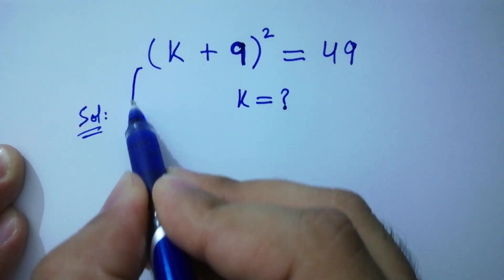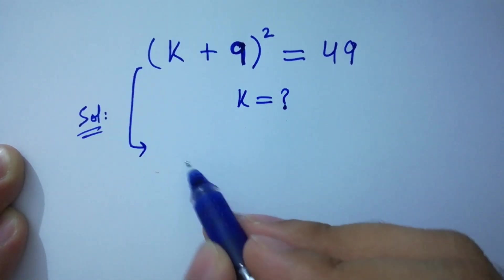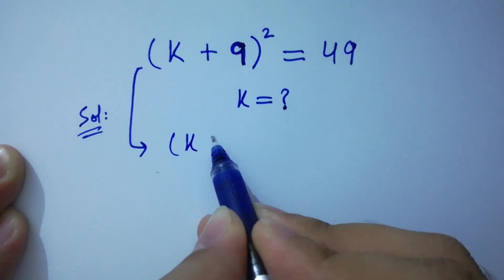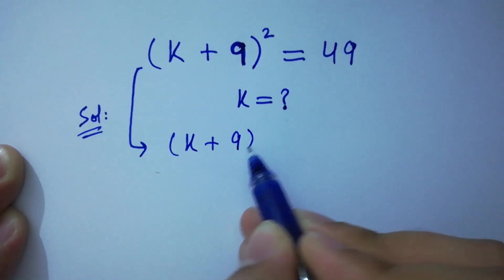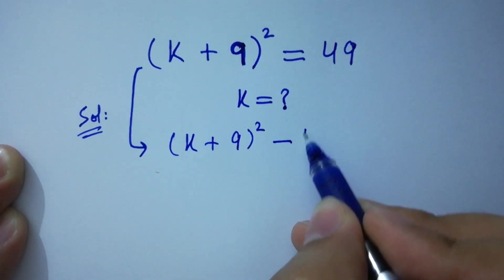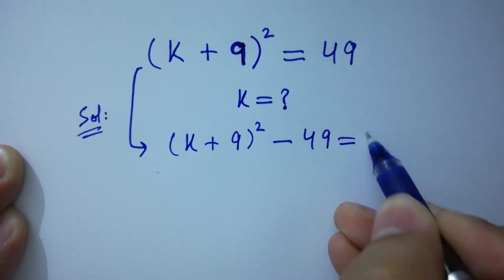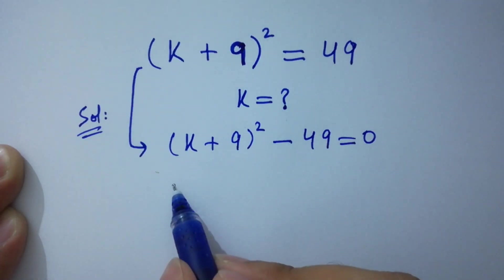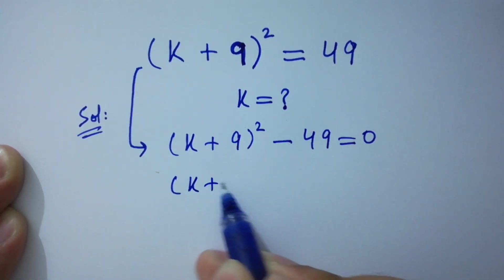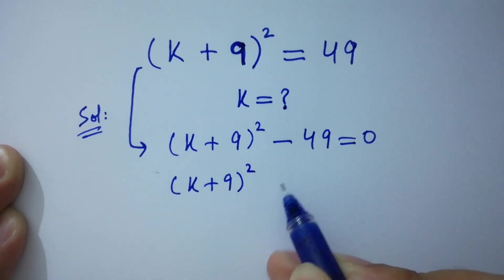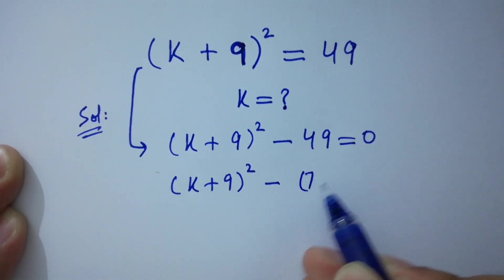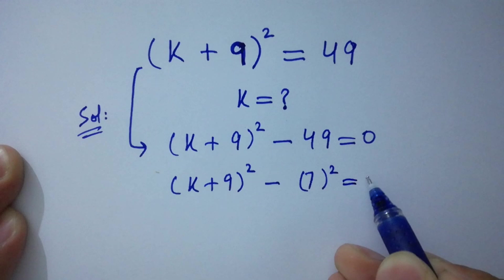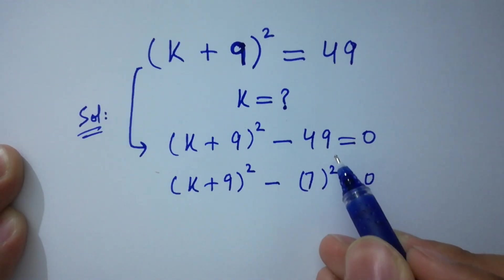It can be written as (k + 9)² - 49 = 0, which is the same as (k + 9)² - 7² = 0, since 7 times 7 is 49.